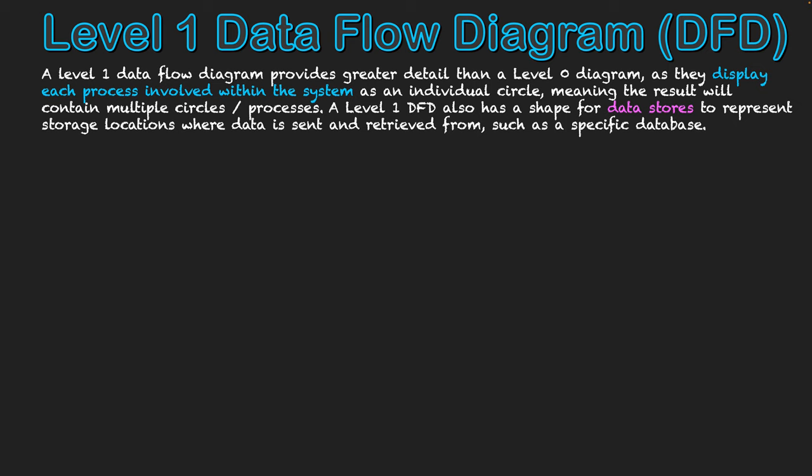A level one DFD also has a shape for data stores to represent storage locations where data is sent to or retrieved from, such as a specific database. So what we're going to take a look at firstly are the different symbols that make up the level one data flow diagram.